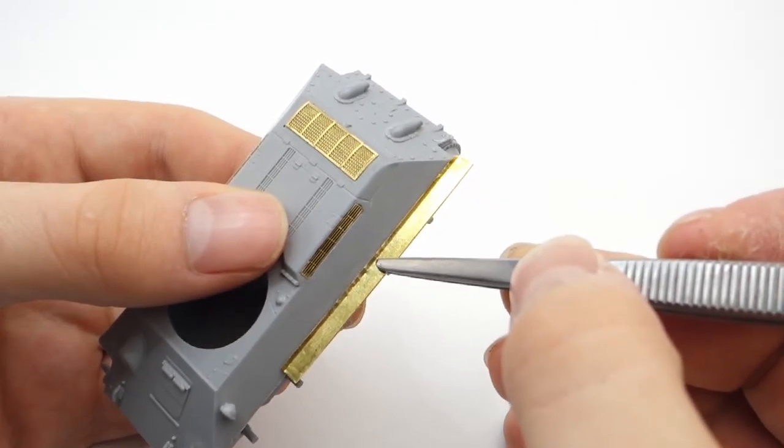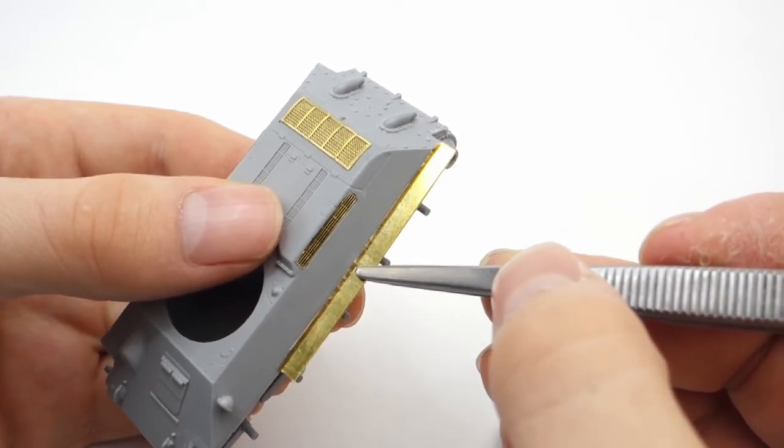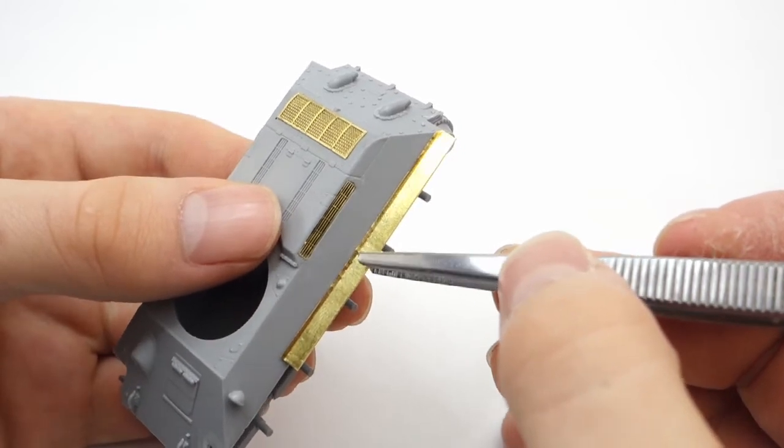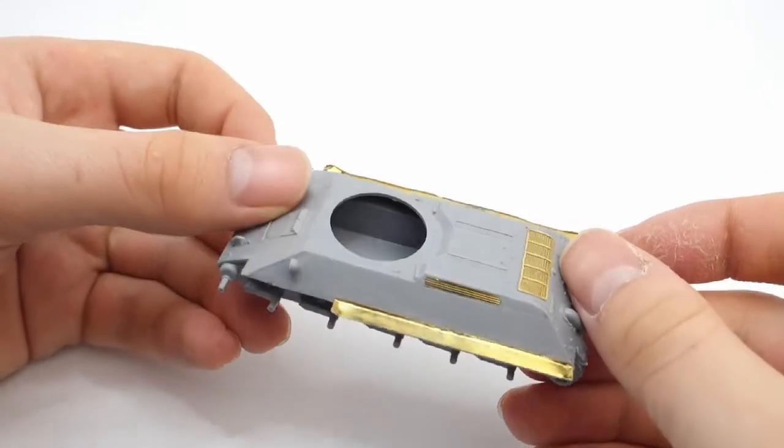A reference photo of the vehicle I'm making shows that it was missing front section of the left fender, so I decided to replicate this detail. I also added some damage to the right fender.